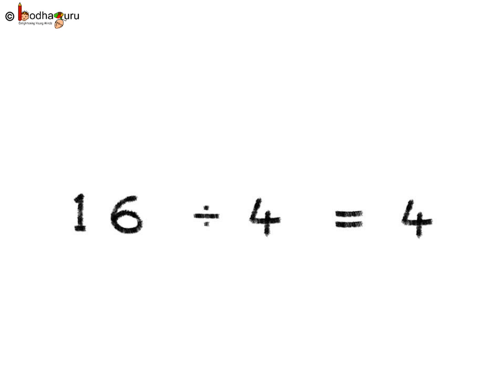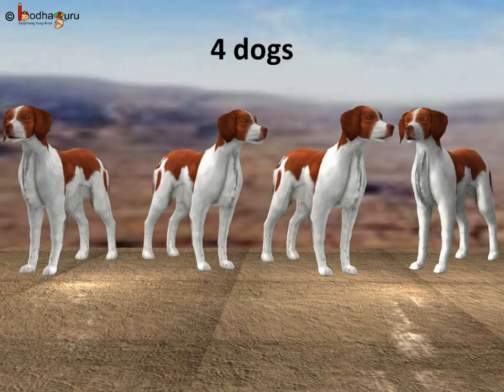So, 4 dogs are there. Let us remove the board. See, 1, 2, 3, 4. 4 dogs are there. Our answer is correct.